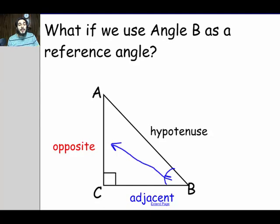So remember, the opposite side is across from the reference angle and the adjacent side is right next to it. In case you're wondering why isn't AB the adjacent side, it's because it's the hypotenuse. The hypotenuse is not called the adjacent side in trig ratios.